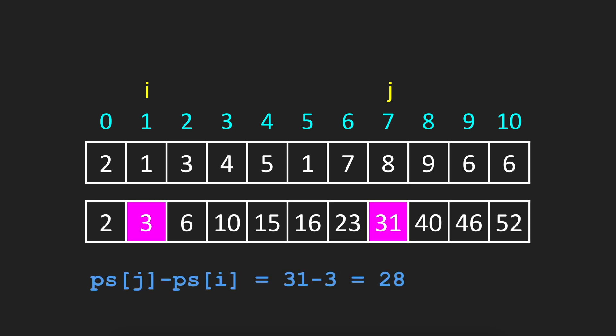Now when we receive a request to calculate the sum from index i to index j, we are simply taking the value from index j and subtracting the value from index i. So for example, in this case, prefix sum j minus prefix sum i, 31 minus 3 gives us 28.